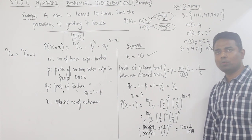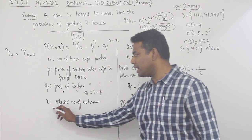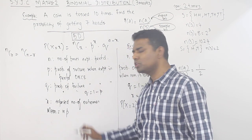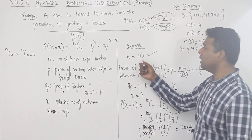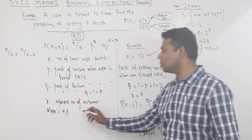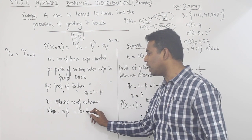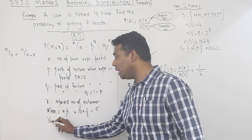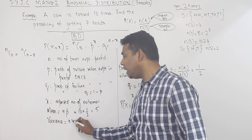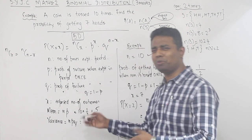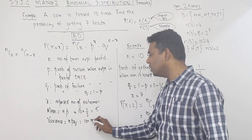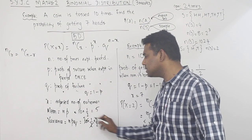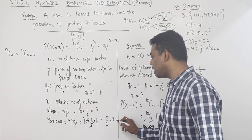One more concept asked in the exam: Mean. Mean = N × P (shortcut). Here n = 10, P = 1/2, so Mean = 10 × 1/2 = 5. And what about Variance? Variance = N × P × Q = 10 × 1/2 × 1/2 = 10/4 = 2.5.